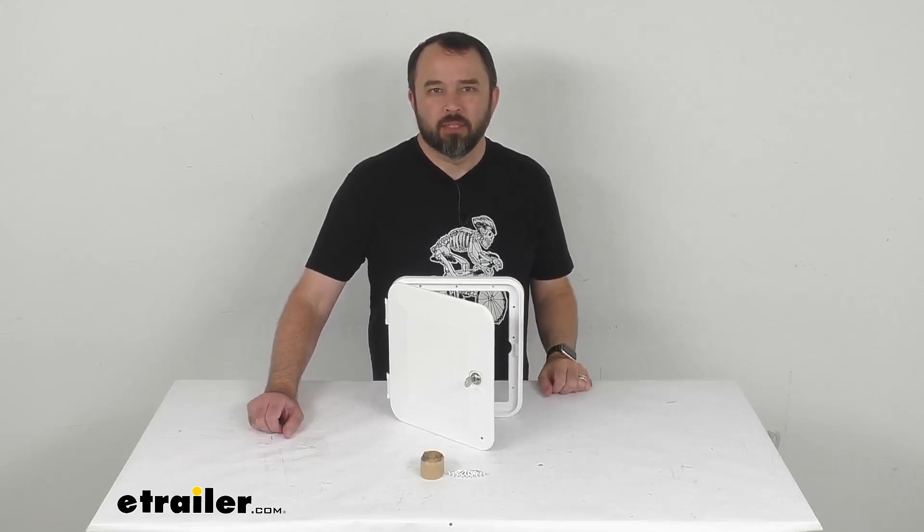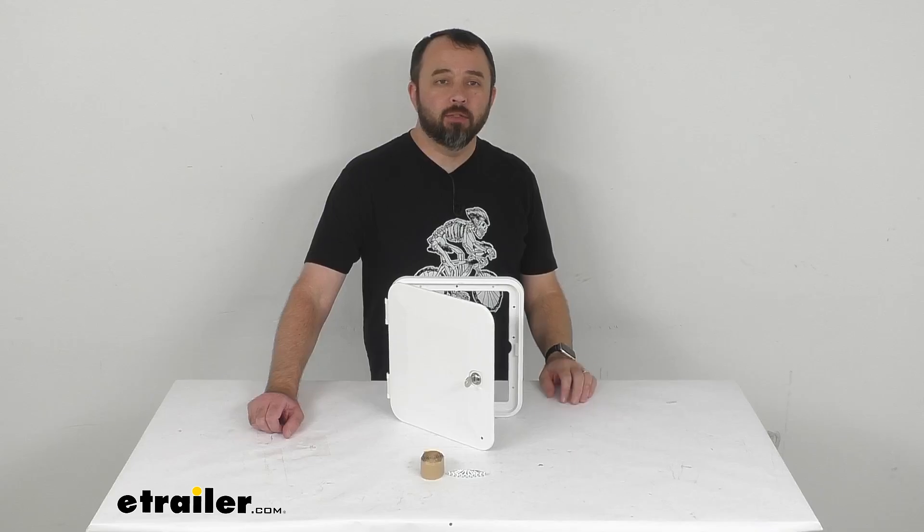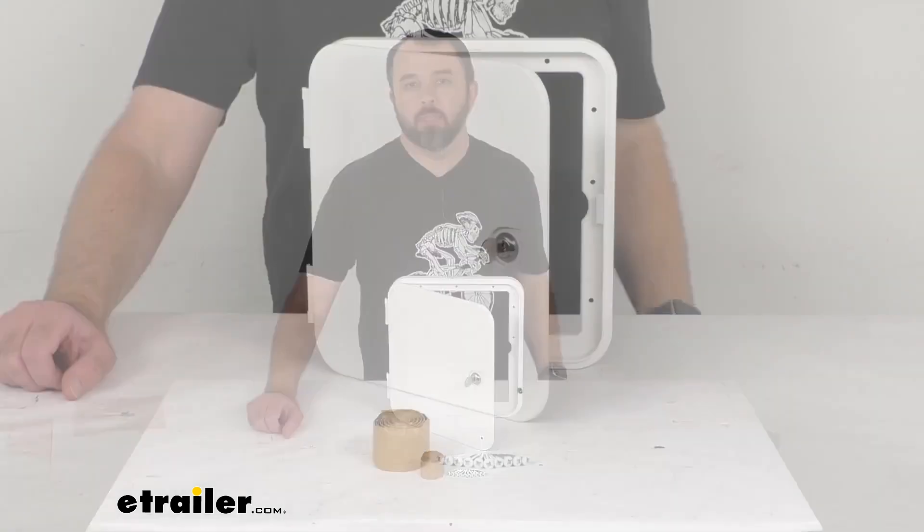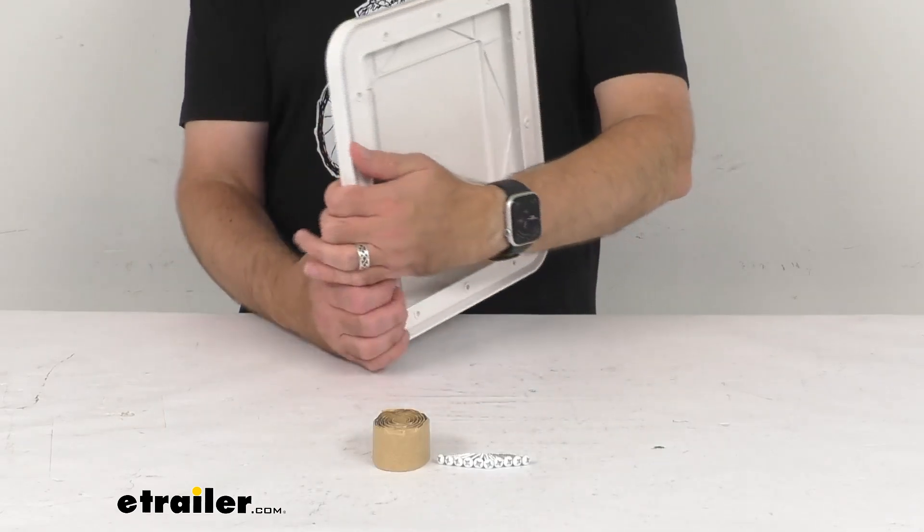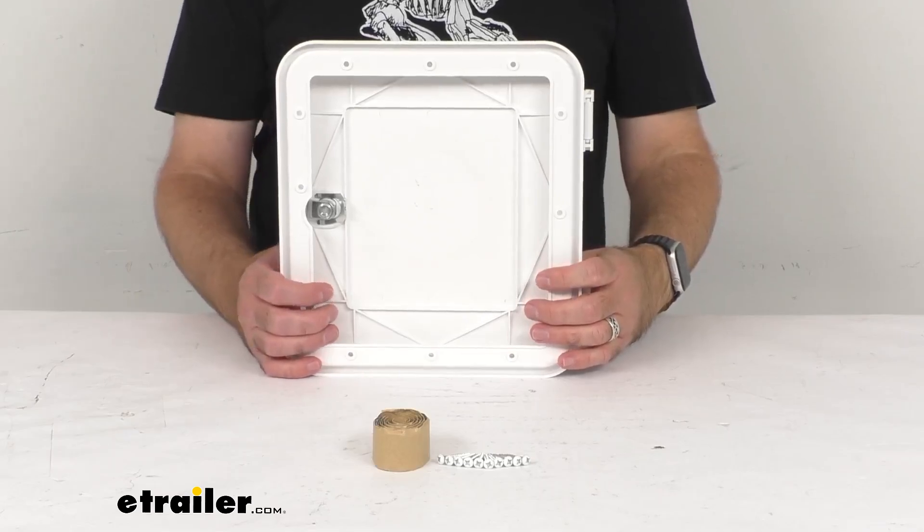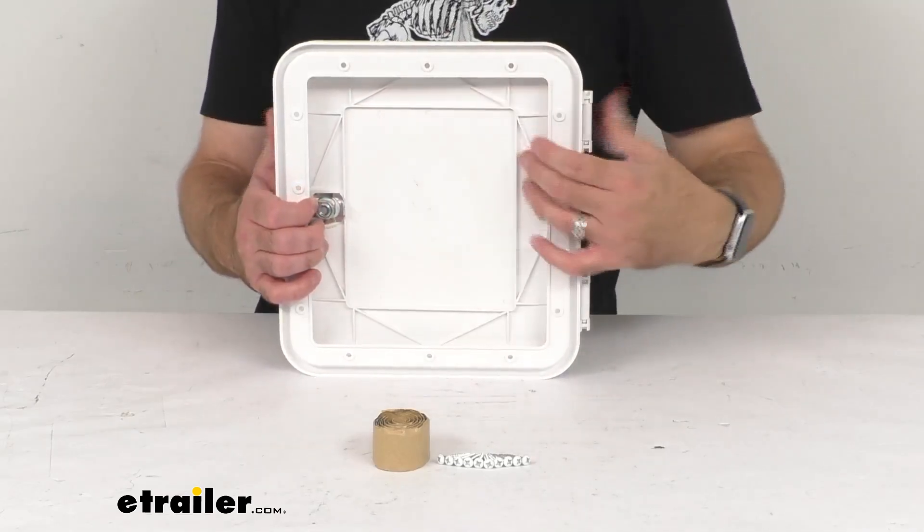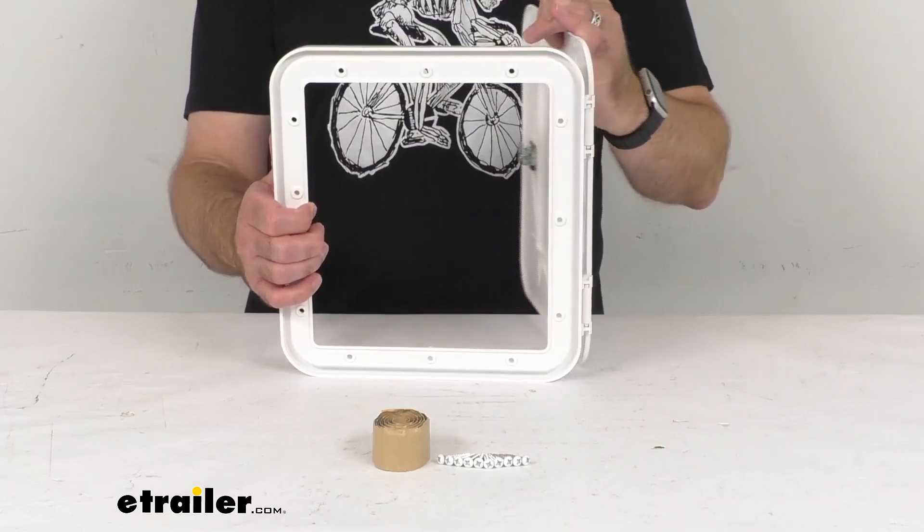Hi everybody, Andy here with etrailer.com. Let's take a brief look together at this BNB polar white RV multi-purpose hatch. This locking molded plastic hatch is going to give you exterior access for any RV need. The open back is going to allow for direct pass-through or recessed inlet.